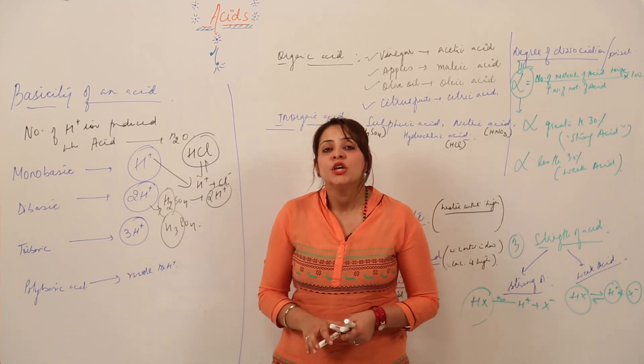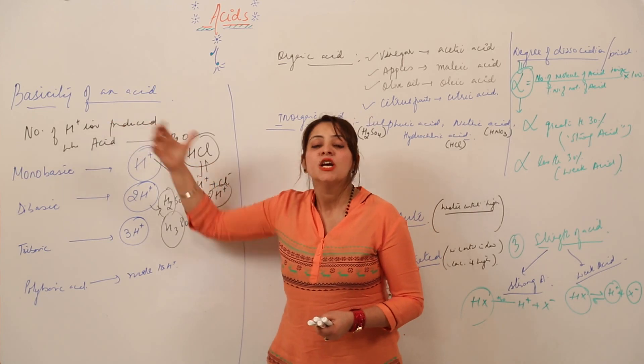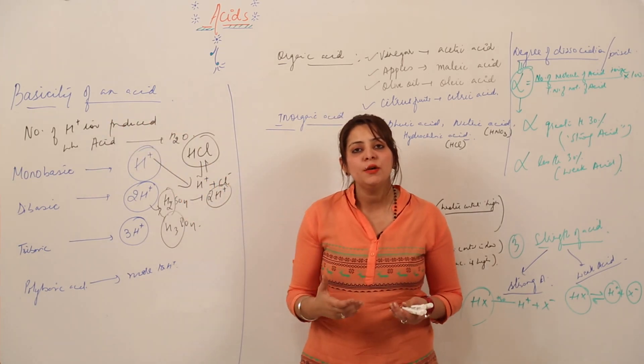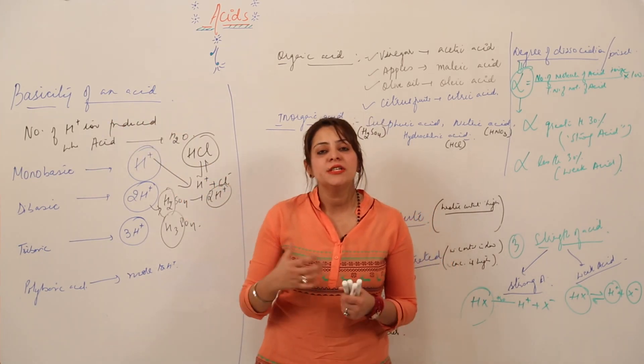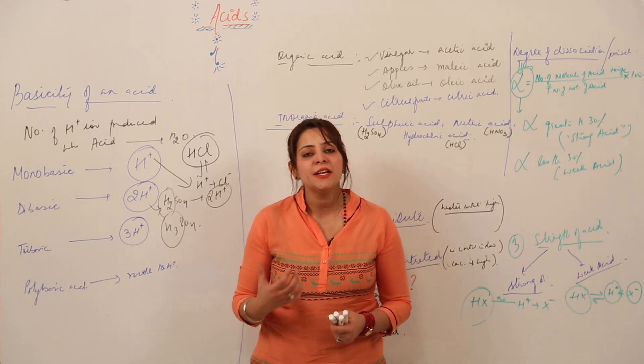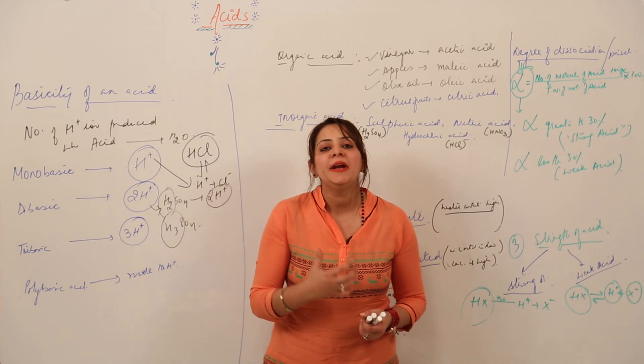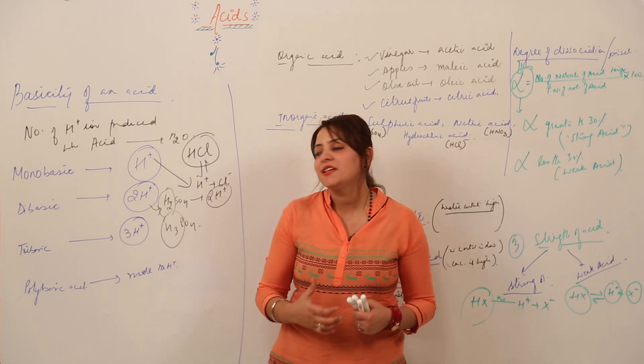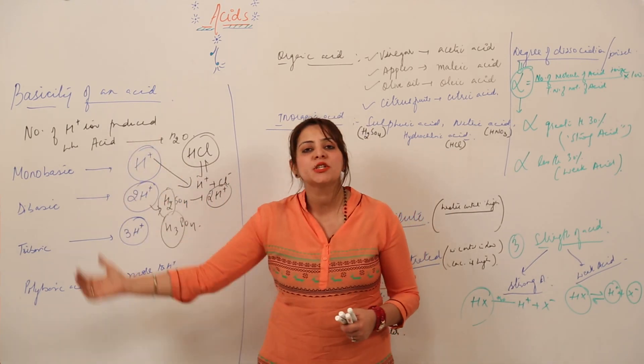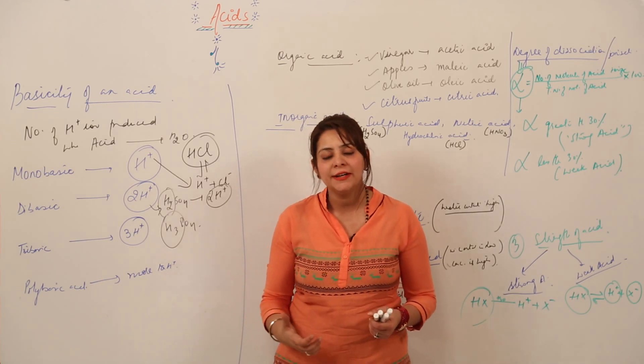This is actually the basicity. If somebody asks you about basicity, you can say it is the number of H ions which an acid produces when it is dissolved in water. Depending upon that number, we classify it under mono basic, di basic, tri basic, or poly basic.